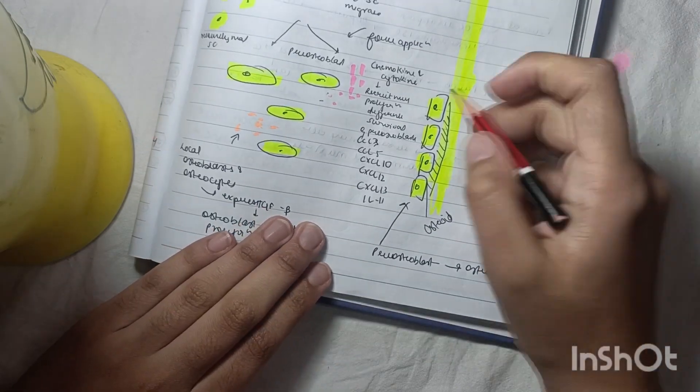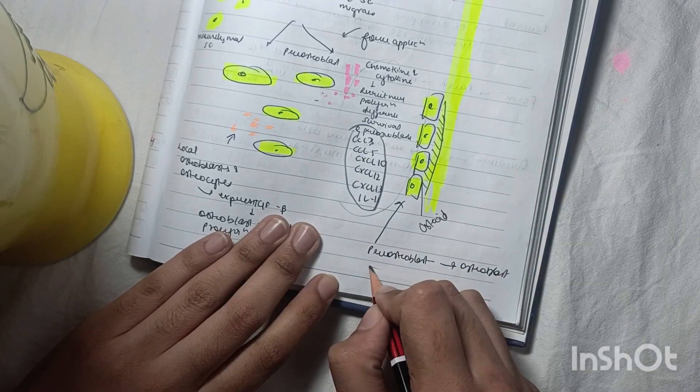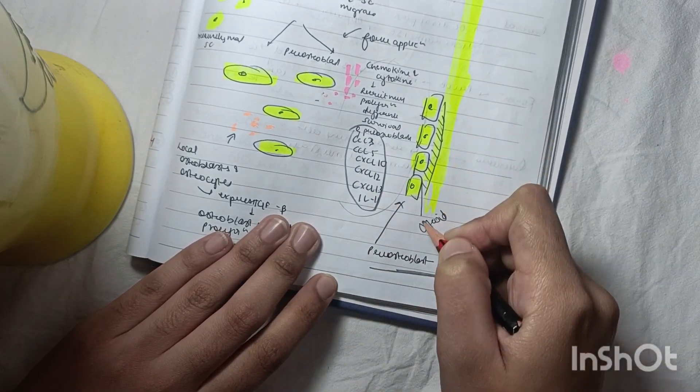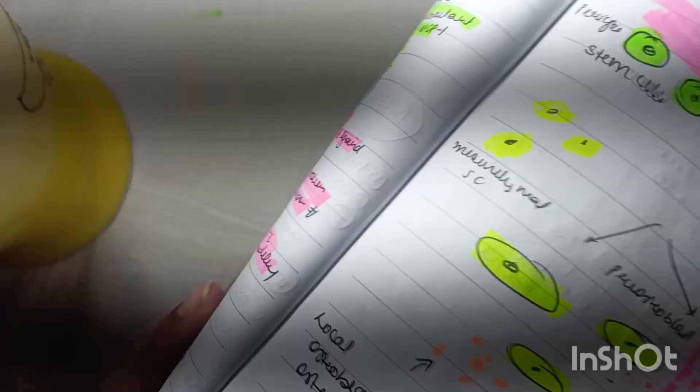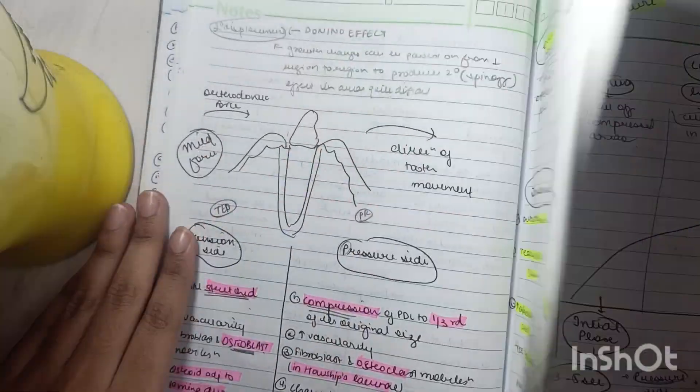They also release chemokines. Pre-osteoblasts convert to osteoblasts, which lay down osteoid. Bone deposition then occurs at the tension side. This completes the biology of tooth movement.